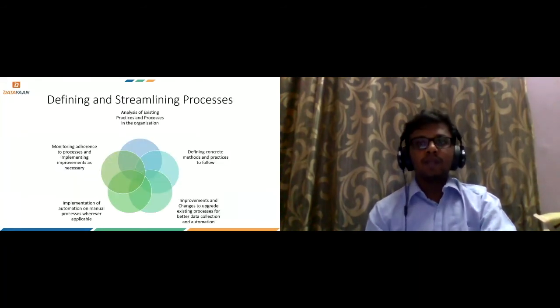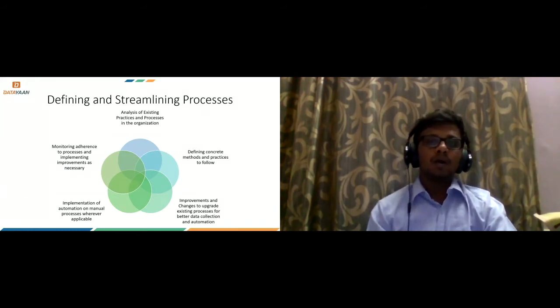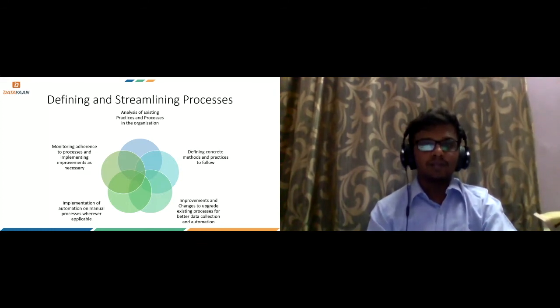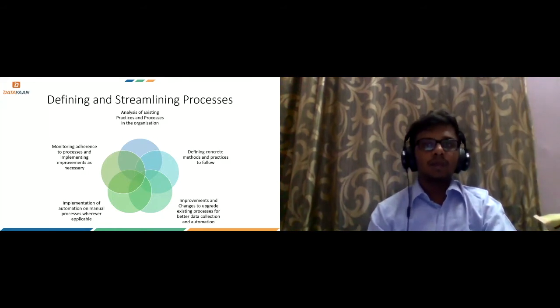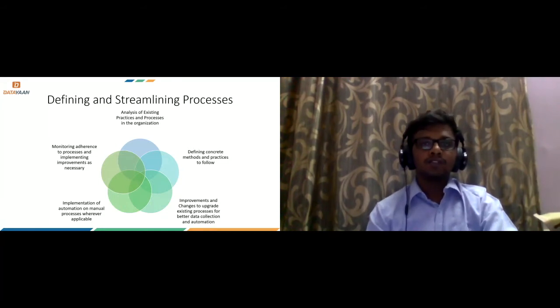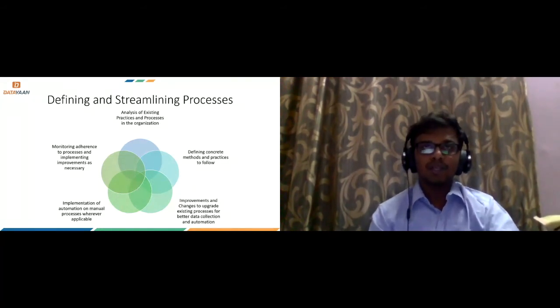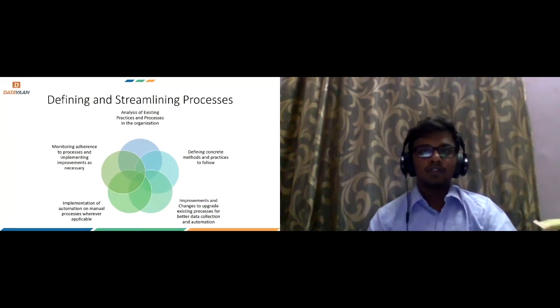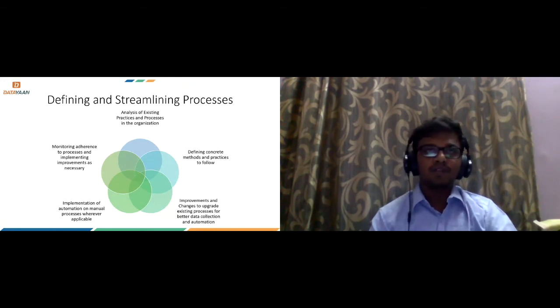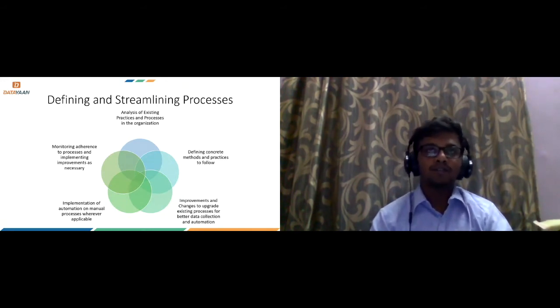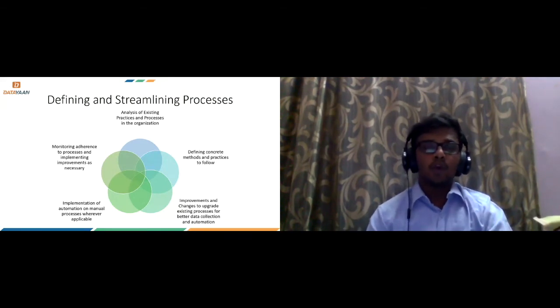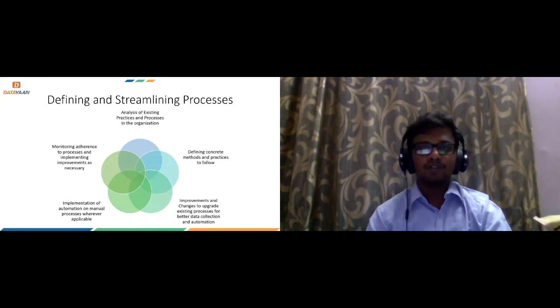So defining and streamlining processes. First, we analyze what the existing practices and processes in the organization are. Since we are taking into consideration the use case of transport logistics, they have multiple systems. They have a system for managing their customers like a CRM, then they have an ERP solution, and then if there's going to be some incidents like there could be an accident or there could be a robbery that took place. To manage all of this, they have separate systems. So each of the systems have their own processes.